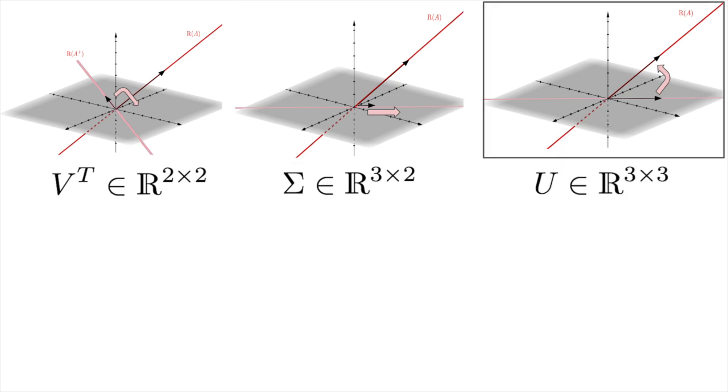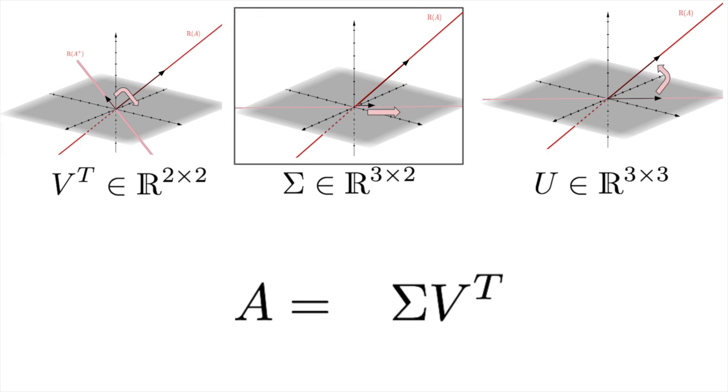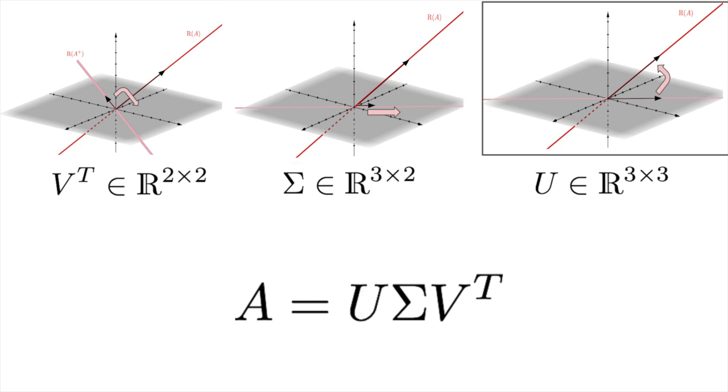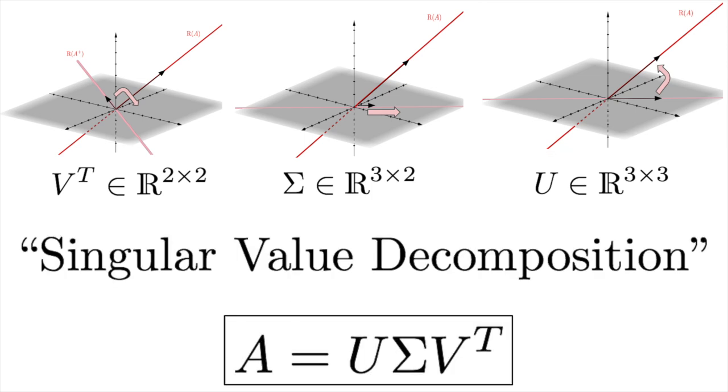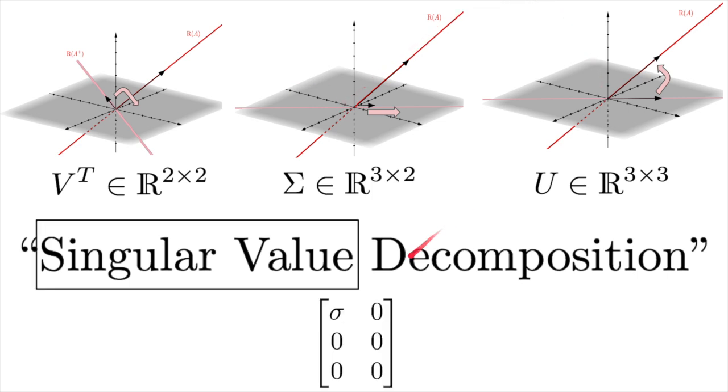Finally, there's the last rotation that moves the scaled line to the correct position in R3. This transformation is represented by the matrix U. U is also an orthogonal matrix, so there's no scaling performed, just pure rotation. Altogether, that means that multiplying a vector by A is equivalent to first multiplying the vector by V transpose to rotate it in the input space, then by sigma to scale it and throw it into R3, and finally by U to rotate it in the output space. This equation is referred to as the singular value decomposition of A. It's called a decomposition because it breaks A down into three parts, the rotation, the scaling, and the second rotation. The singular values are the names of the entries in the sigma matrix that indicate how much A scales any vector.